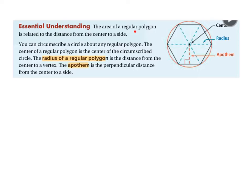The area of a regular polygon is related to the distance from the center to a side. You can circumscribe a circle about any regular polygon, and the center of a regular polygon is the center of the circumscribed circle. If it's a regular polygon, there's going to be one spot in the center that's equidistant from all the vertices — that's the radius from the center to the vertex. The apothem is the perpendicular distance from the center to the side. Let's apply this to some problems.